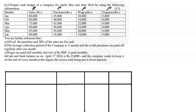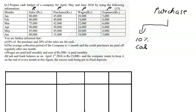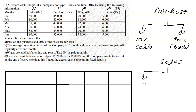We are further informed that 10% of purchases is cash, and therefore 90% of purchases will be on credit. For sales, 20% is cash and the remaining 80% is credit.